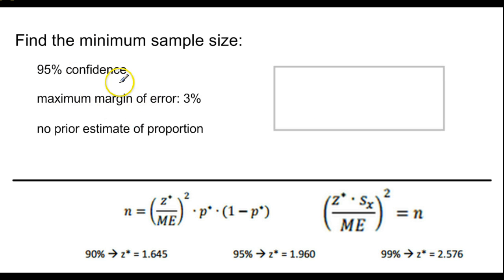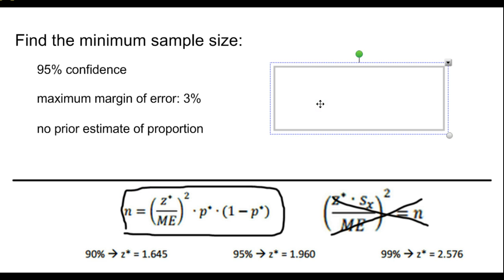Next example, we have 95% confidence, maximum margin of error 3%, and we have no prior estimate of the proportion. Well, we're dealing with a proportion here then. So we're calculating minimum sample size. So that's our basic starting equation that we have. And we need to plug in our values.